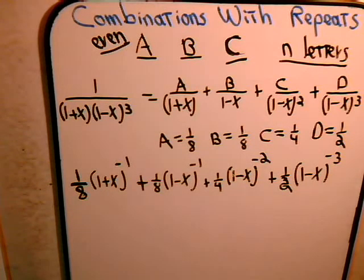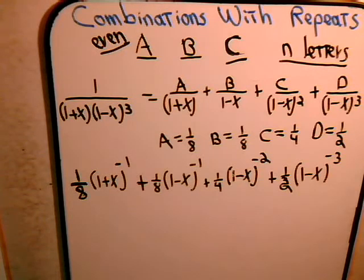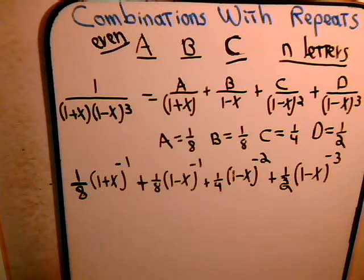We are right now in part two of problem number five of combinations with repeats, and it's another problem that we're solving using generating functions. The problem is deceptively simple: we have three letters A, B, and C, and we can select from each letter multiple times. The only restriction is that when we include A, we must have an even number of As. So how many ways can we select N letters?